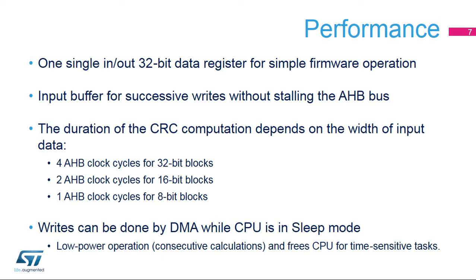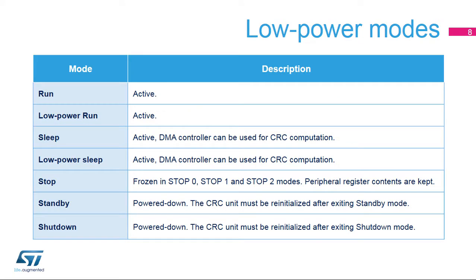The duration of the computation depends on the data width. The DMA controller can be used for writing to the CRC engine, offloading the CPU for other tasks and enabling back-to-back calculations for verifying code or data integrity. This slide summarizes the power modes in which the CRC calculation unit is available. The CRC calculation unit needs the main AHB clock to operate.